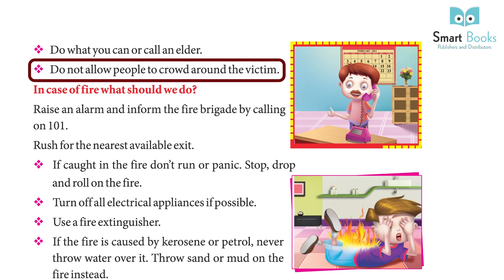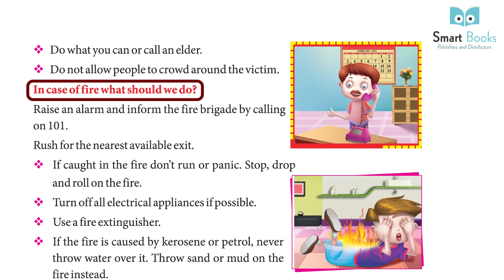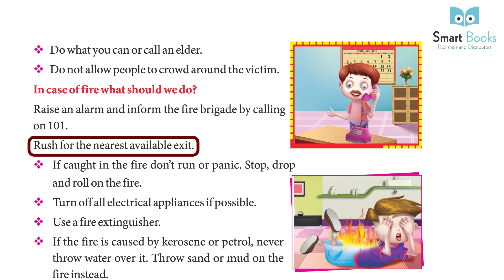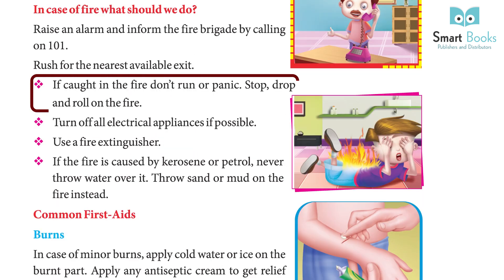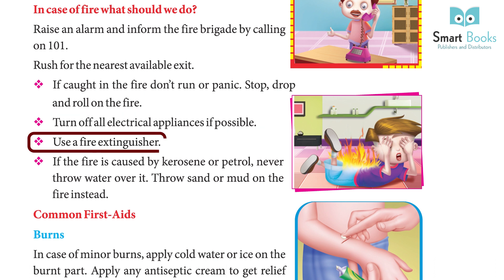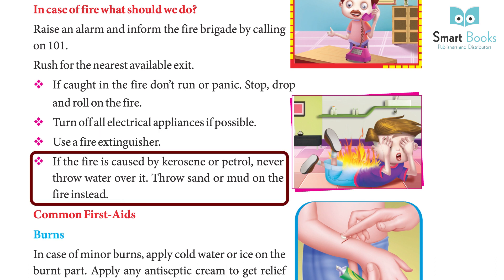In case of fire, what should we do? Raise an alarm and inform the fire brigade by calling 101. Rush for the nearest available exit. If caught in fire, do not run or panic — stop, drop and roll on the fire. Turn off all electrical appliances if possible. Use a fire extinguisher. If the fire is caused by kerosene or petrol, never throw water over it — throw sand or mud on the fire instead.